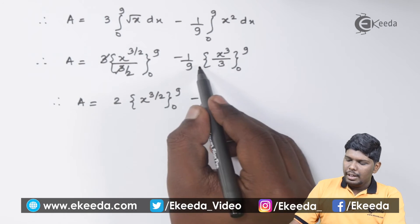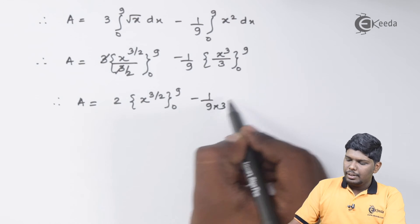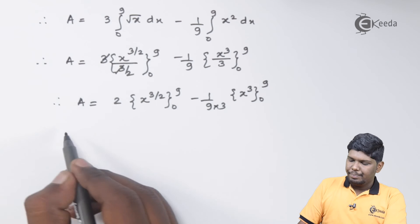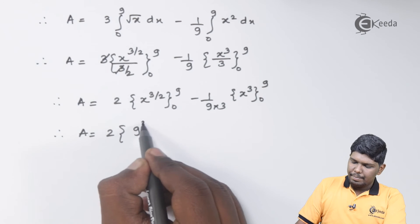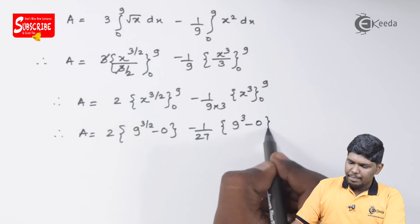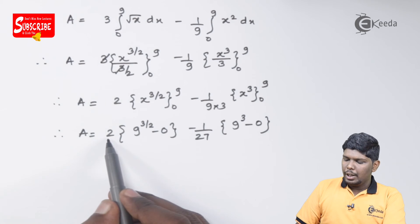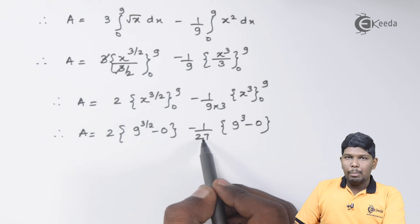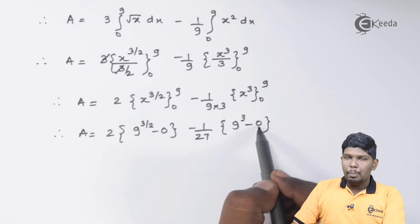Here 3 will be cancelled and 2 will directly come in the numerator. Further we have 1 upon 9, taking these 3 outside, we have x cube within limits 0 to 9. On substituting upper and lower limits, we will get 2 into 9 raise to 3 by 2 minus 0, minus 1 upon 27, 9 cube minus 0.